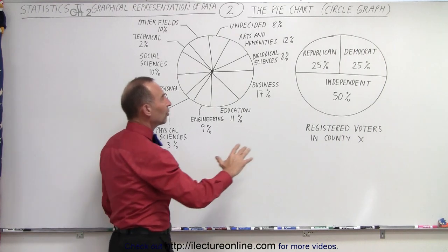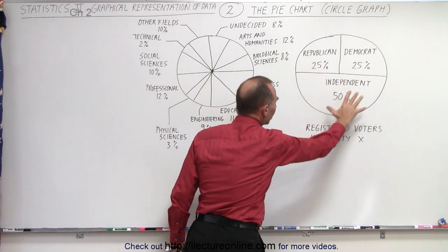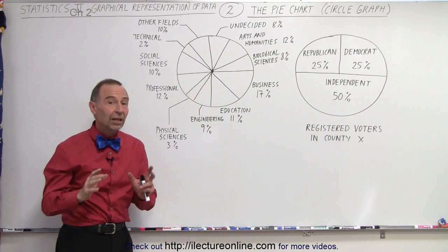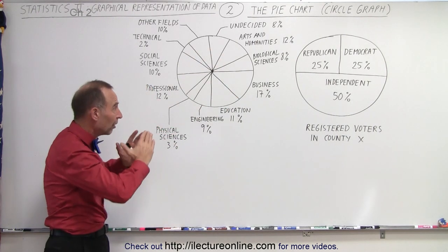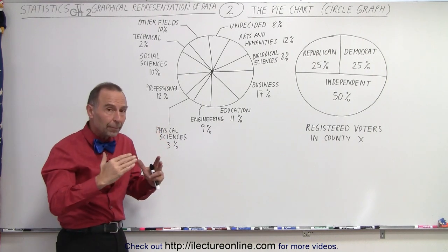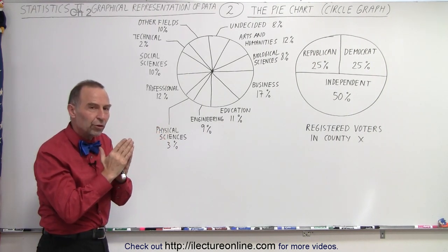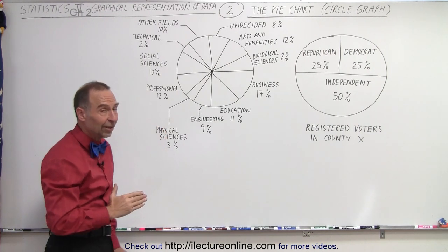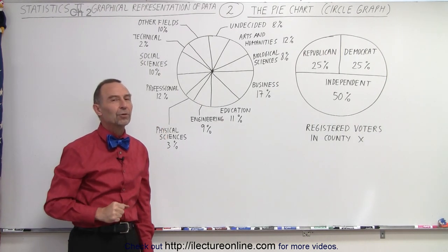So pie charts tend to work better with fewer data types. They tend to work not quite as well with large data types, unless there's a big difference between the parts that are very common or very popular versus the ones that are just a few. If you can readily see a big difference in the size of each slice, then it becomes a very useful type of graph.